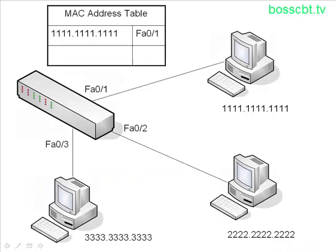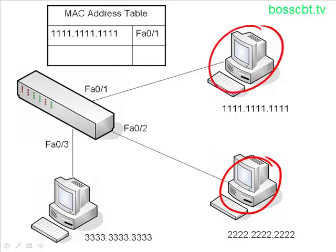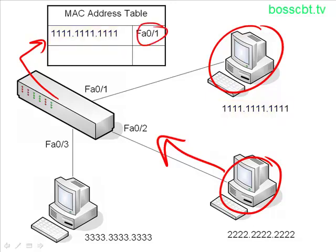If we look at an example of a switch forwarding a frame, we'll uncover a particular type of problem and the resolution to that problem will lead us into a discussion about flooding frames. So let's take an example where PC2 wants to send a frame to PC1. PC2 sources the frame, puts it on the wire, it hits the switch. The switch then consults its MAC address table and sees that the MAC address for PC1, the destination MAC address, is listed along with a port. So now the switch knows to send the frame out FA01 and the job of forwarding the frame is complete.